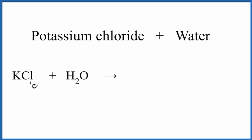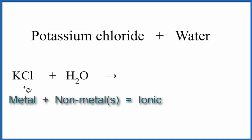Potassium is a metal, and chlorine is a non-metal. So when we have a metal and a non-metal, we have an ionic compound, and we have to take into account the ions.